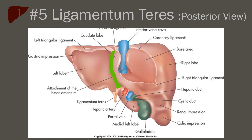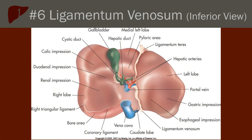A final view of the ligamentum teres on the posterior side shows the ligamentum teres joining to the ligamentum venosum, shown in green. The sixth ligament is the ligamentum venosum. The ligamentum venosum is a continuation of the ligamentum teres on the superior posterior portion of the liver. Once called the ductus venosus — a vein used in fetal circulation — its obliteration causes the ligament to form. The ligament runs through a fissure called the left intersegmental fissure and connects to the left portal vein. The lesser omentum also connects to this fissure and ligament. This inferior view shows how the ligamentum teres wraps around the inferior liver and continues to the ligamentum venosum.